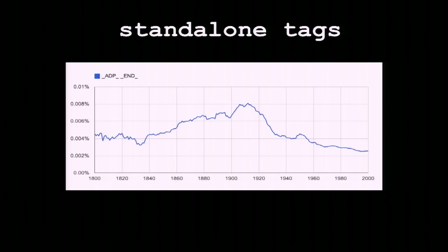We can also use arbitrary standalone tags. Let's say we want to look at how much sentences end in prepositions — ADP is an abbreviation for a class of words that includes prepositions, and END denotes the end of a sentence. Over the last two centuries, from 1800 to 1900 we had an increase in ending sentences with prepositions, but thanks to grammarians, school teachers, and others, we've fought back. We are now at an all-time low of ending sentences with prepositions — which is something we really shouldn't put up with.